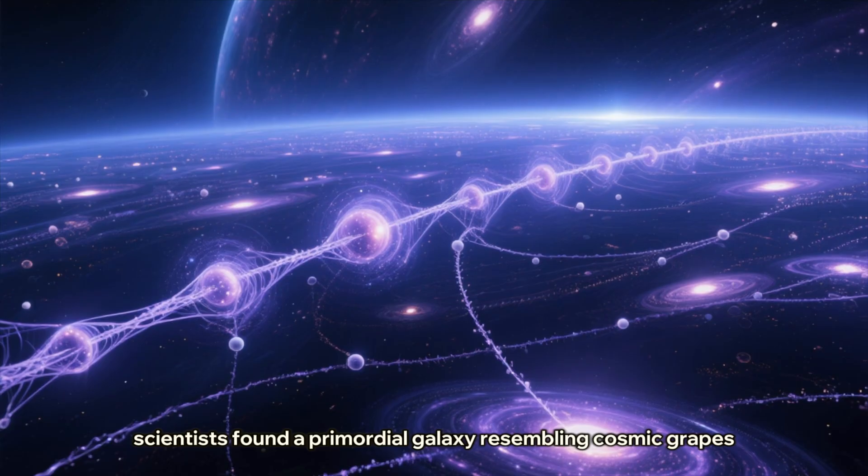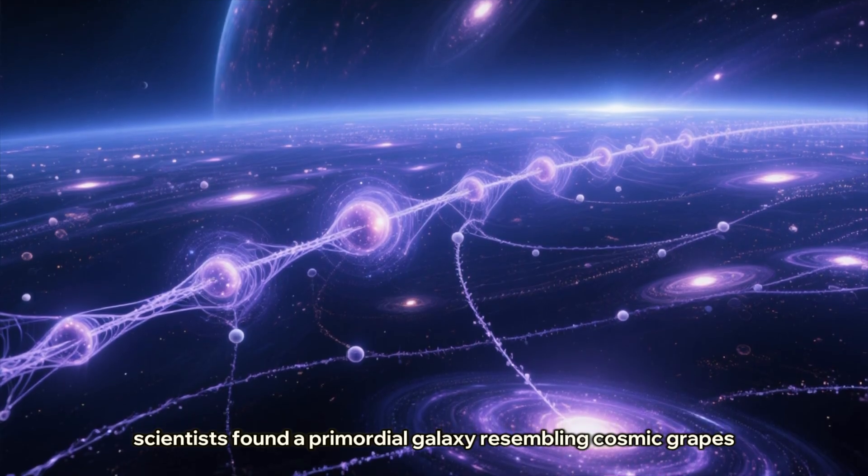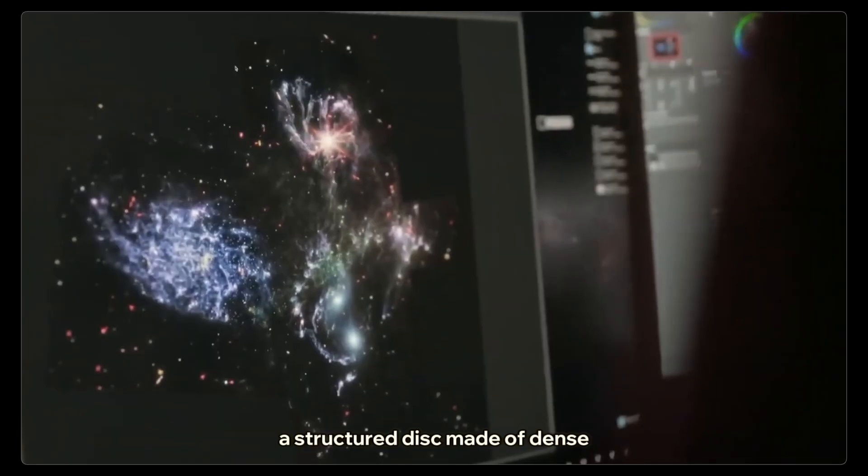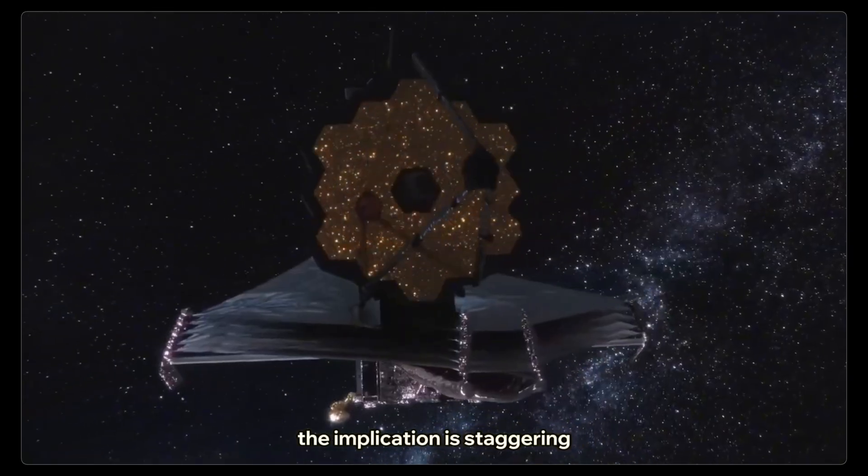In another instance, scientists found a primordial galaxy resembling cosmic grapes, a structured disk made of dense, clumpy regions of furious star formation. The implication is staggering.